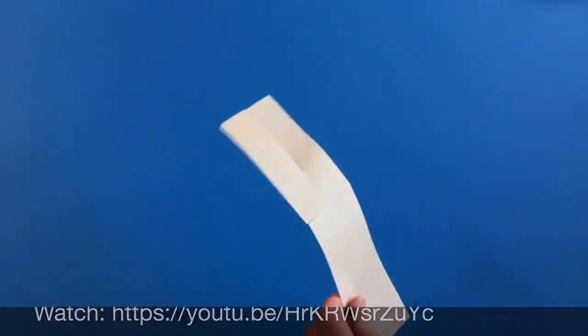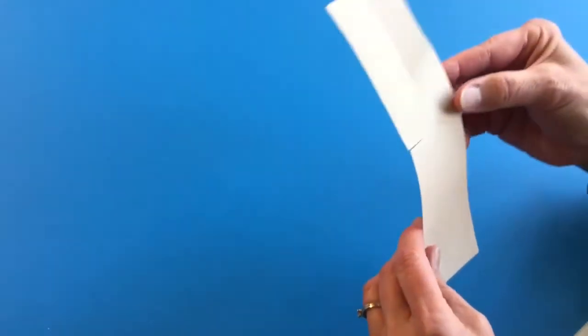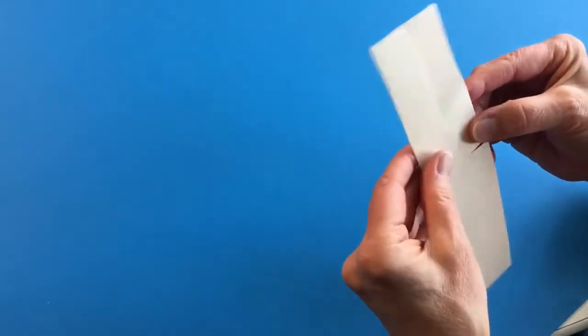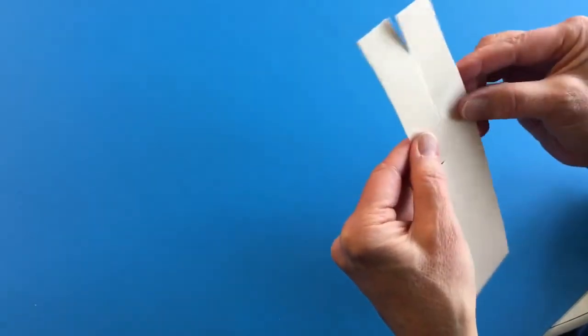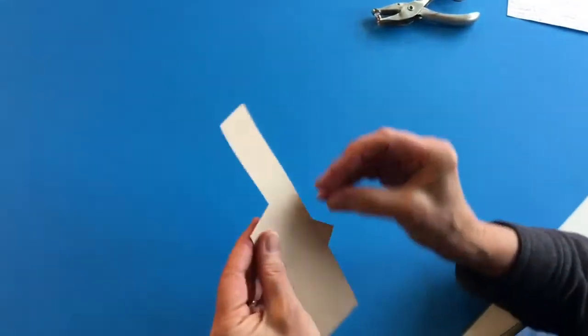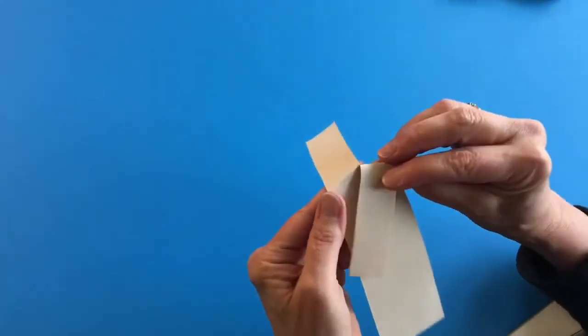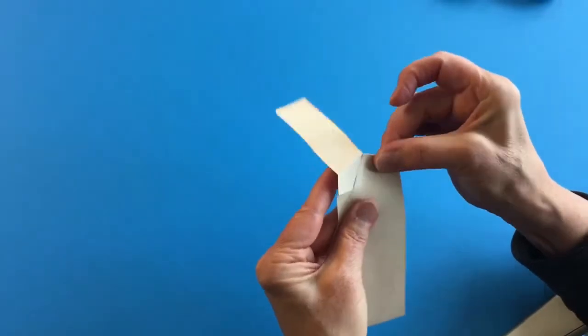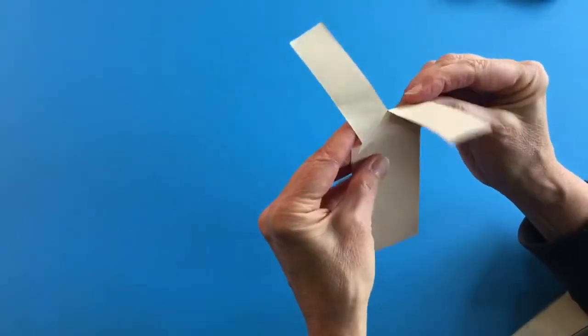For now we have a whirligig and we are going to first fold these two parts a little askew like that, a little across. Fold the other side the same way, kind of slanted.